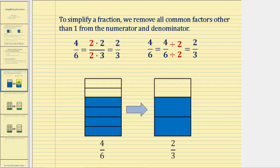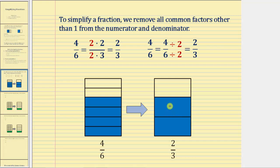Let's go back to that fraction of four-sixths, which, if we define the rectangle as one whole, would be modeled here. Looking at the second model, we can see that two-thirds is equivalent to four-sixths because the same amount of the whole is shaded. But for this model, we're using larger parts or larger pieces to represent the amount.